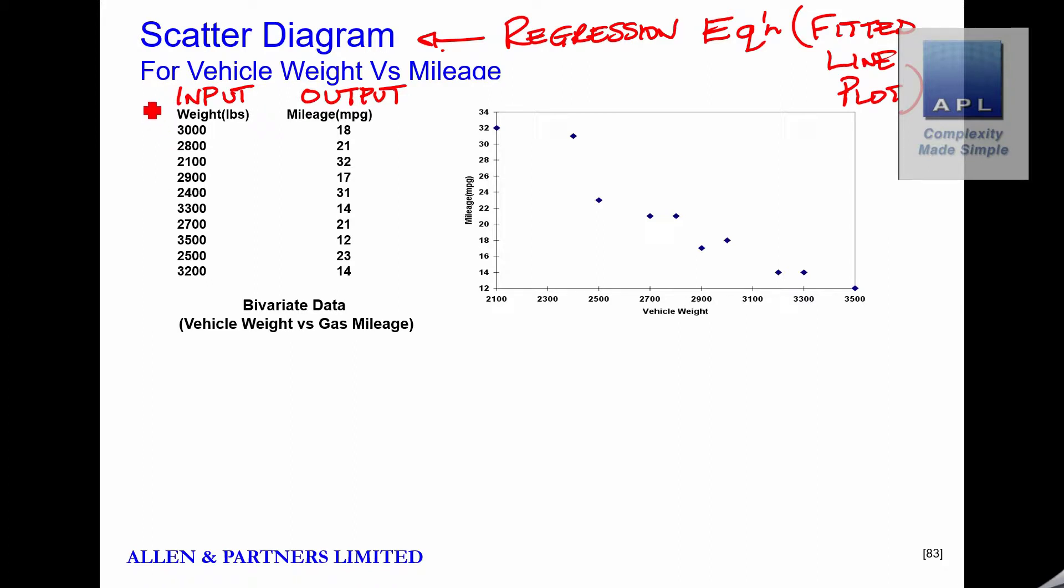Just to be clear for those of you not mathematically minded: the input is always an X, the output is always the Y. What that means is when Minitab draws the diagram, it will always put the input across the bottom scale, the output on the left-hand scale. You're going to see that in the software when we go to it.